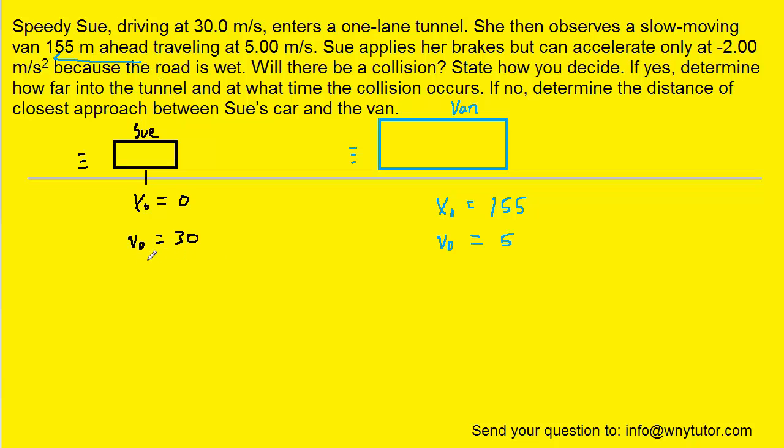We'll also note that the initial velocity of Sue is 30 meters per second, and the initial velocity of the van is 5 meters per second. And then the acceleration is stated as negative 2 meters per second squared, and the van is not accelerating.